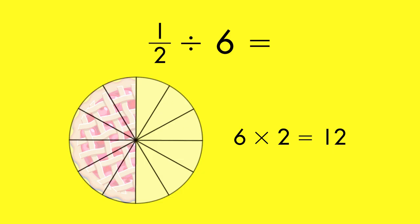So, how much of the whole pie will each of the 6 people get? Each person will get 1 of the 12 original slices, or 1 twelfth of the whole cherry pie.